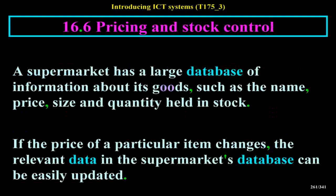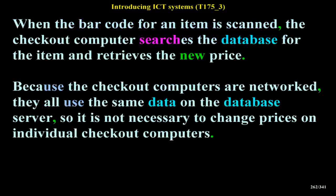Pricing and stock control: a supermarket has a large database of information about its goods, such as the name, price, size and quantity held in stock. If the price of a particular item changes, the relevant data in the supermarket's database can be easily updated. When the barcode for an item is scanned, the checkout computer searches the database for the item and retrieves the new price. Because the checkout computers are networked, they all use the same data on the database server, so it is not necessary to change prices on individual checkout computers.